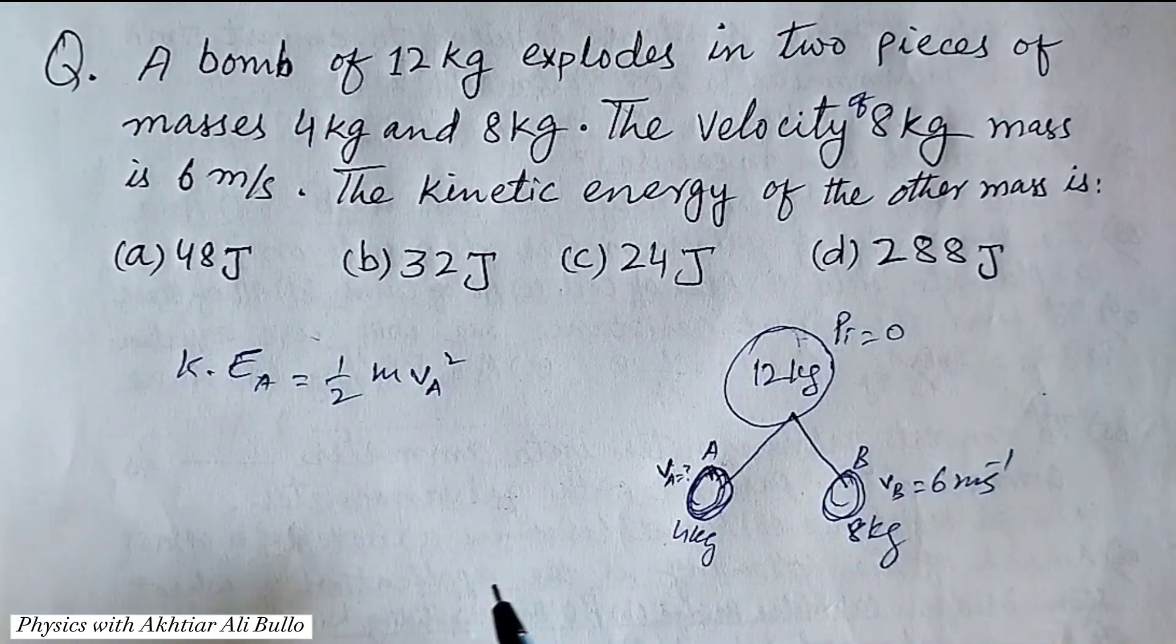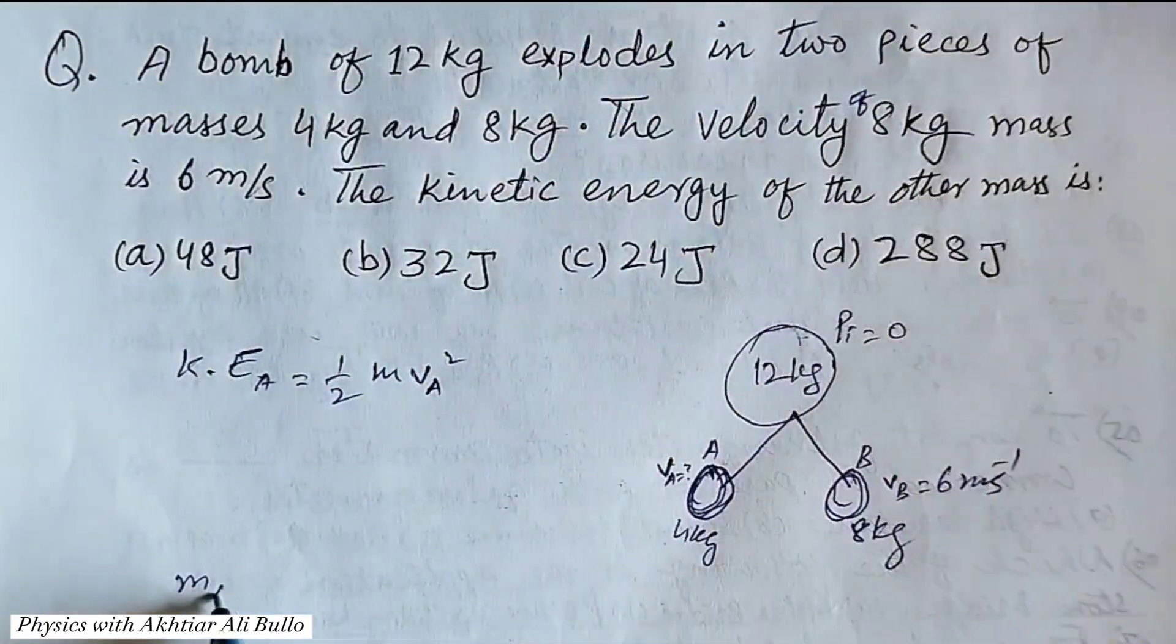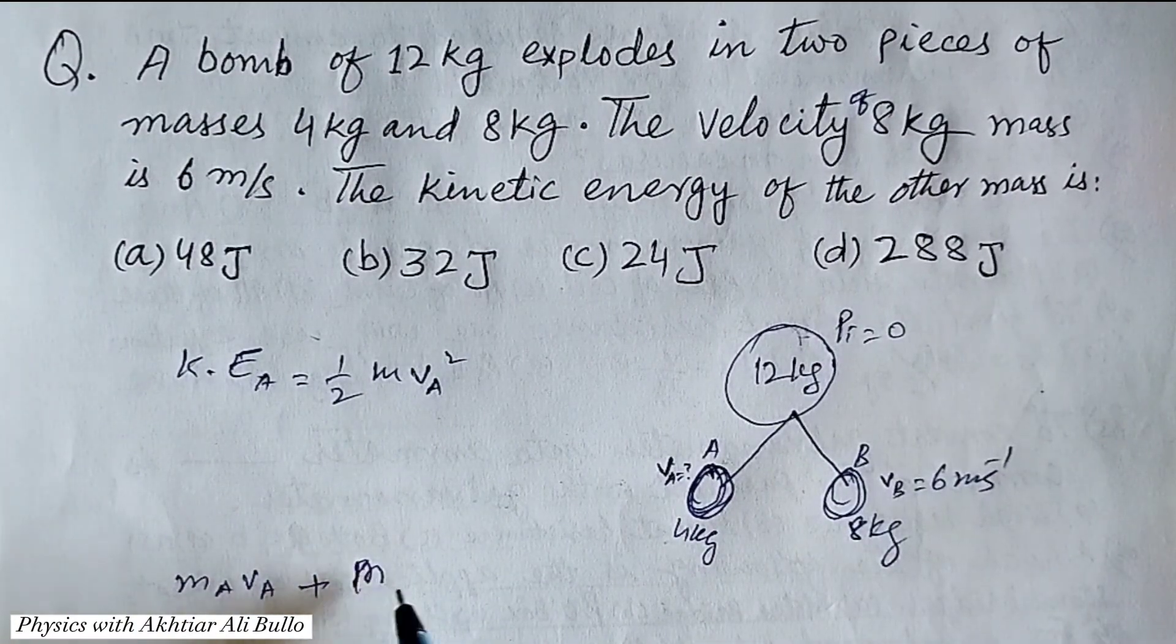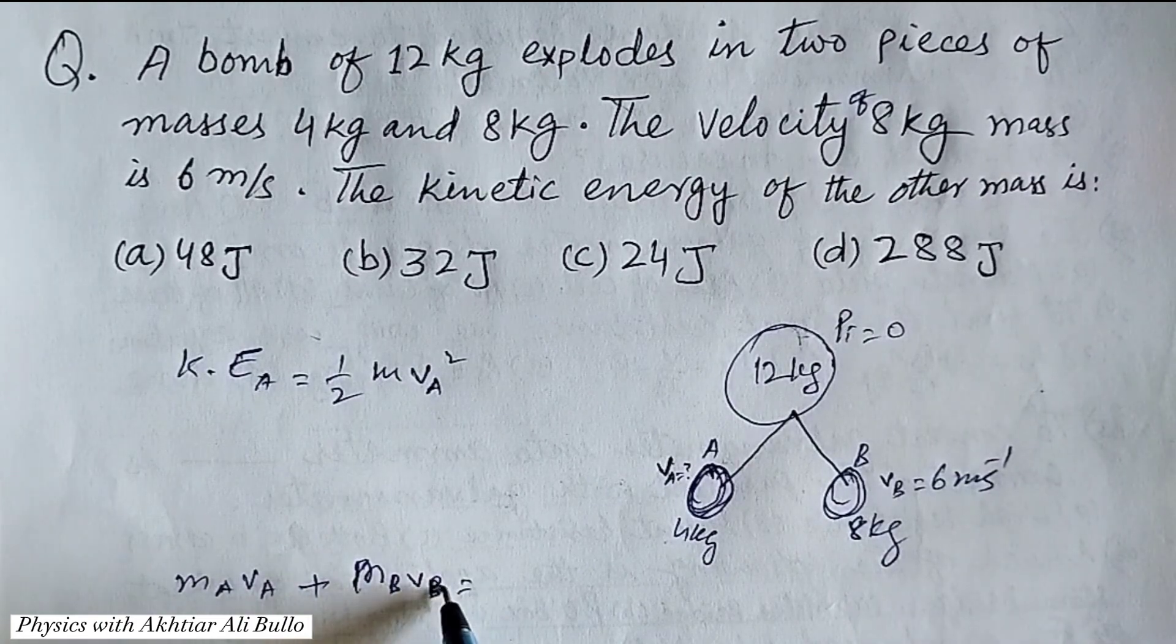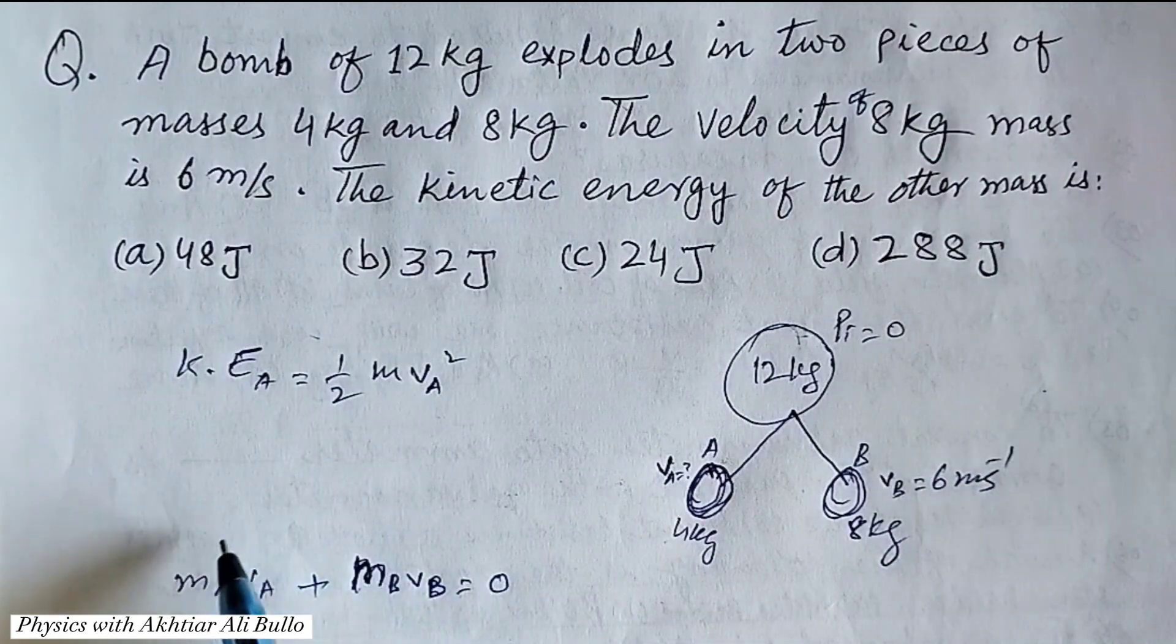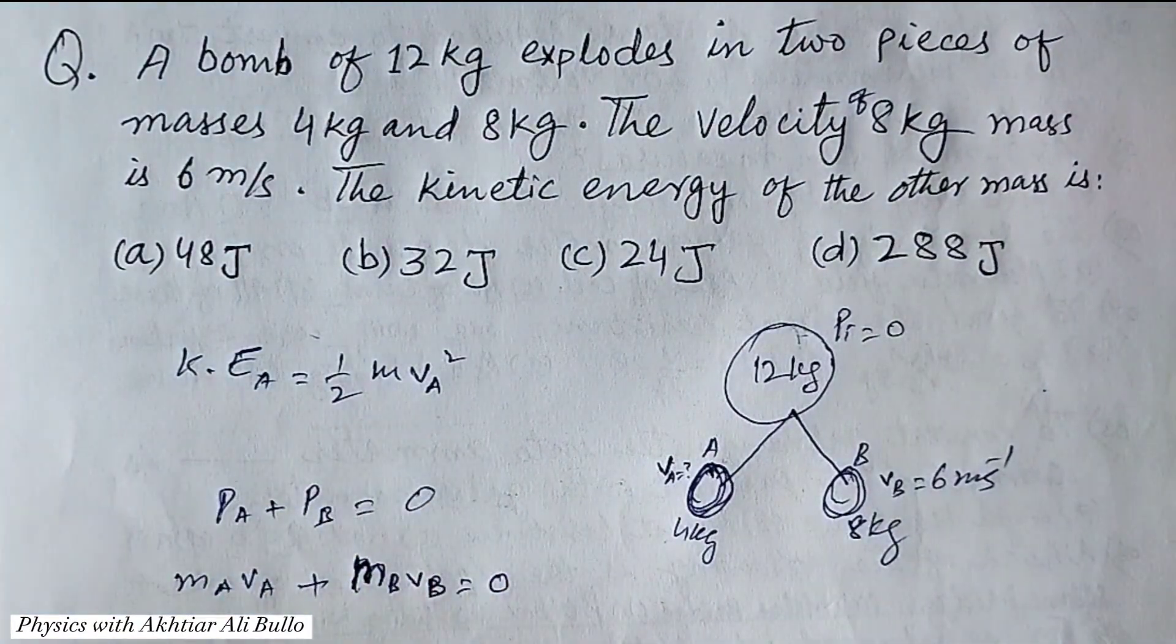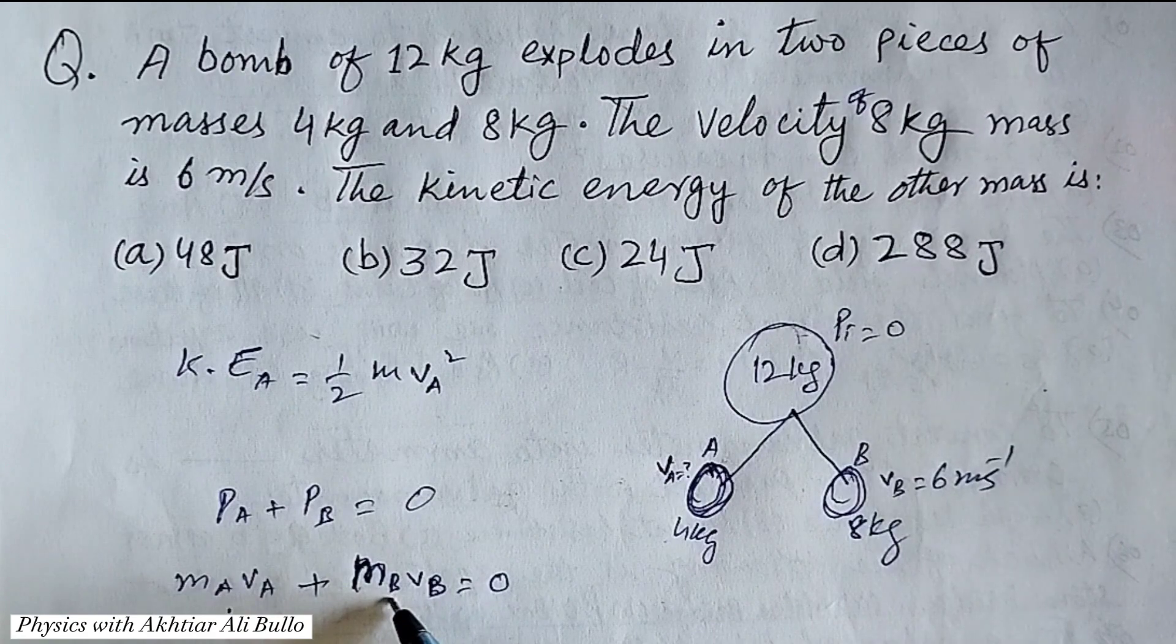So the momentum of A plus the momentum of B is equal to 0. By conservation of momentum, mₐvₐ + mᵦvᵦ = 0.